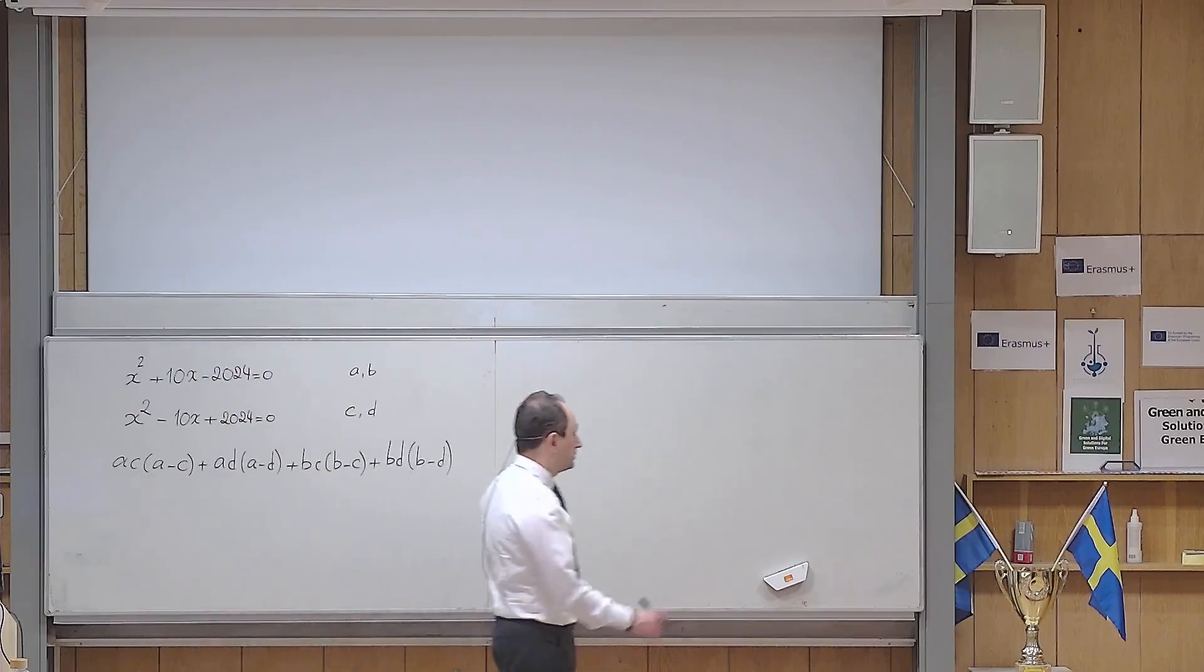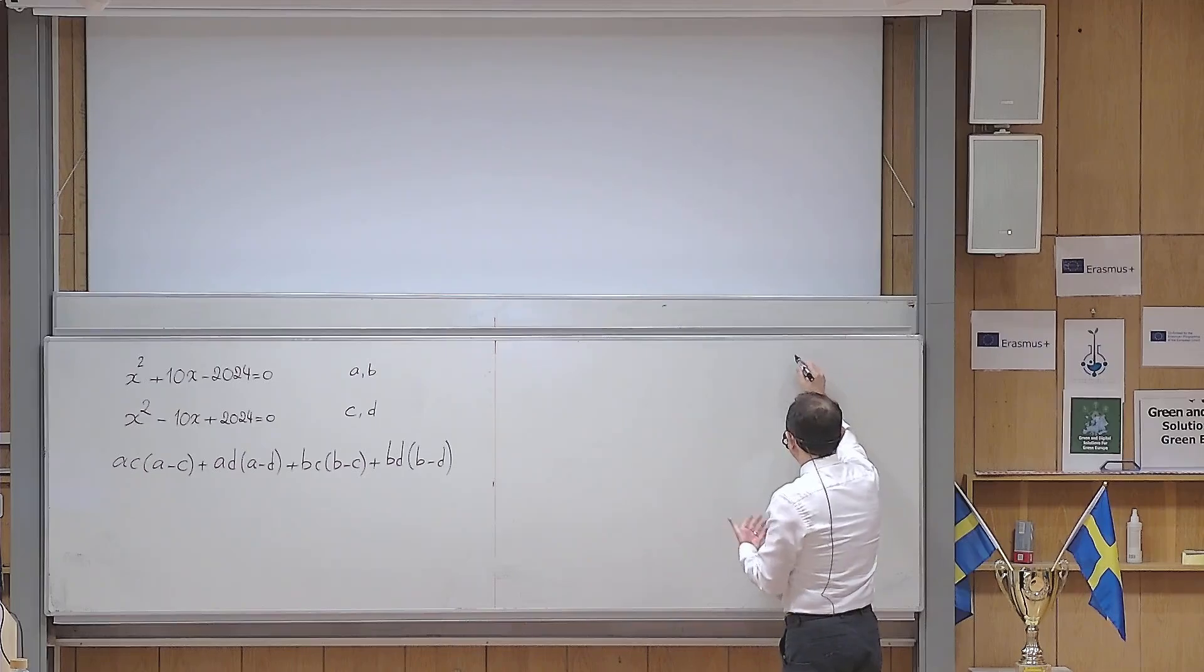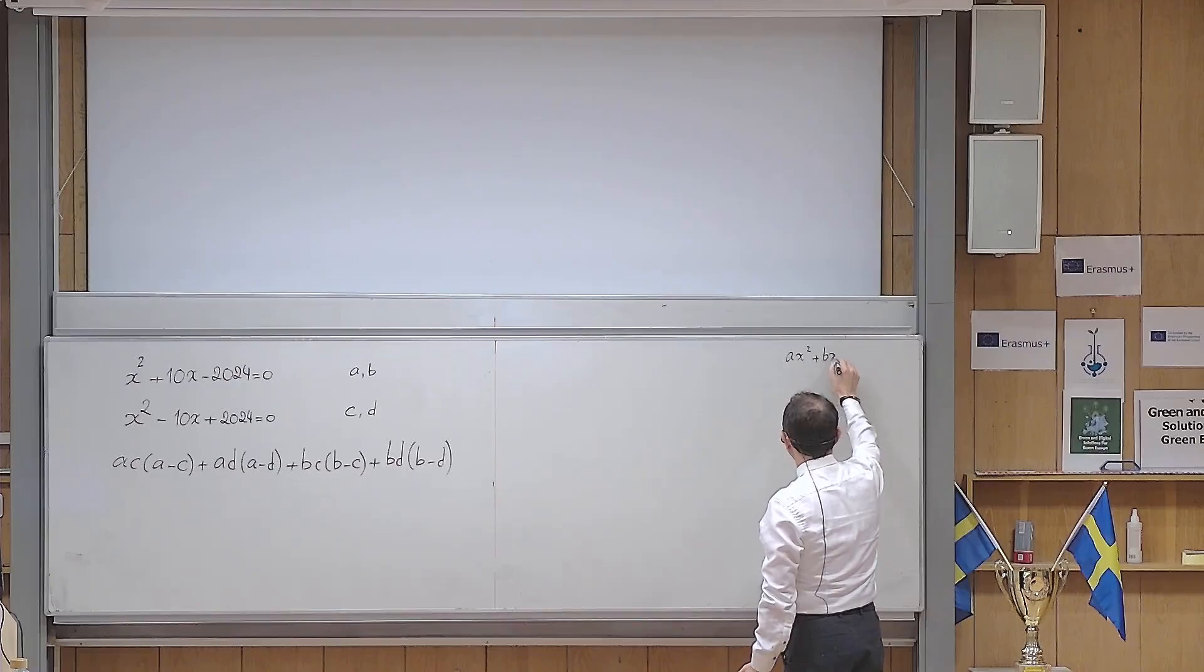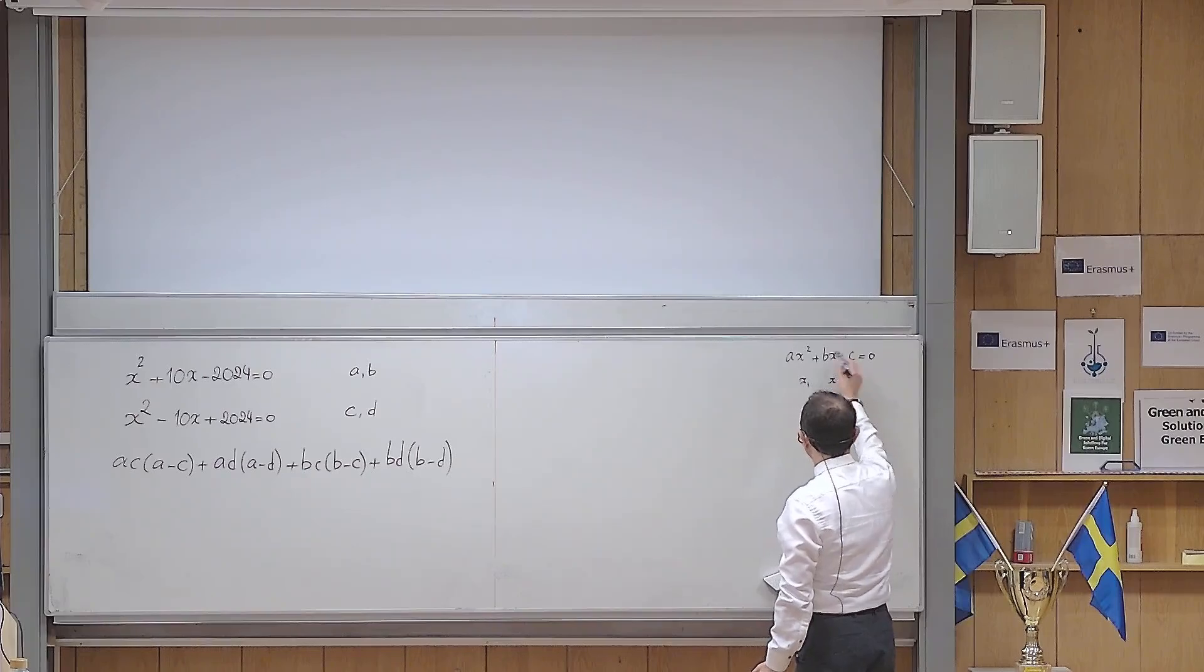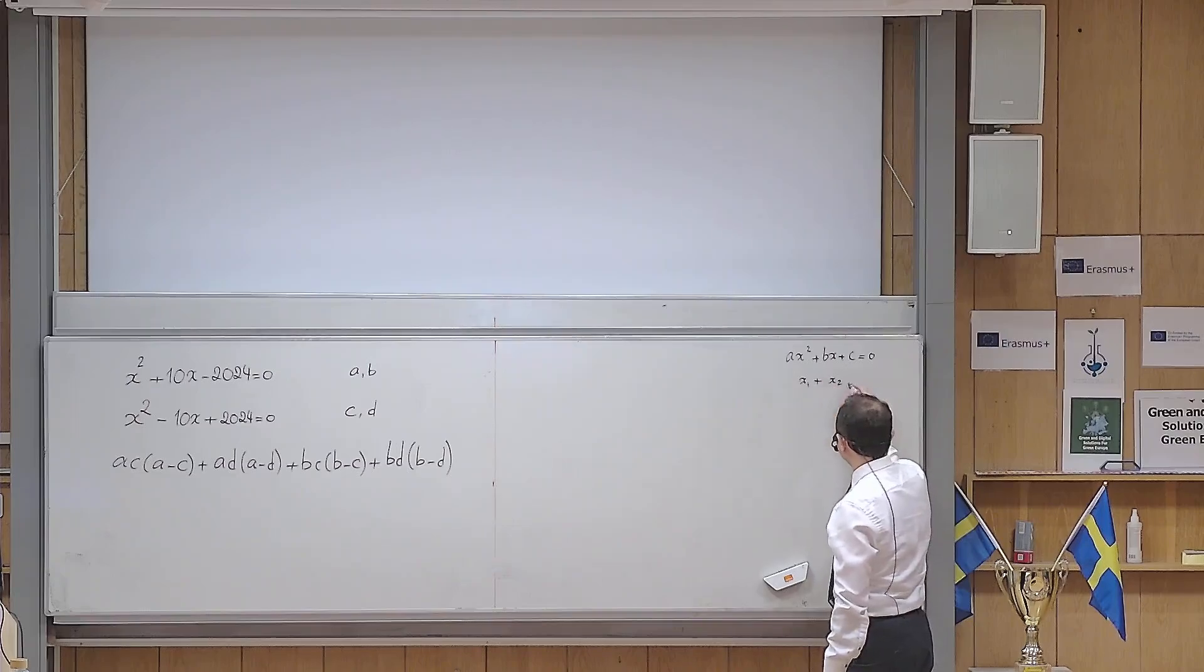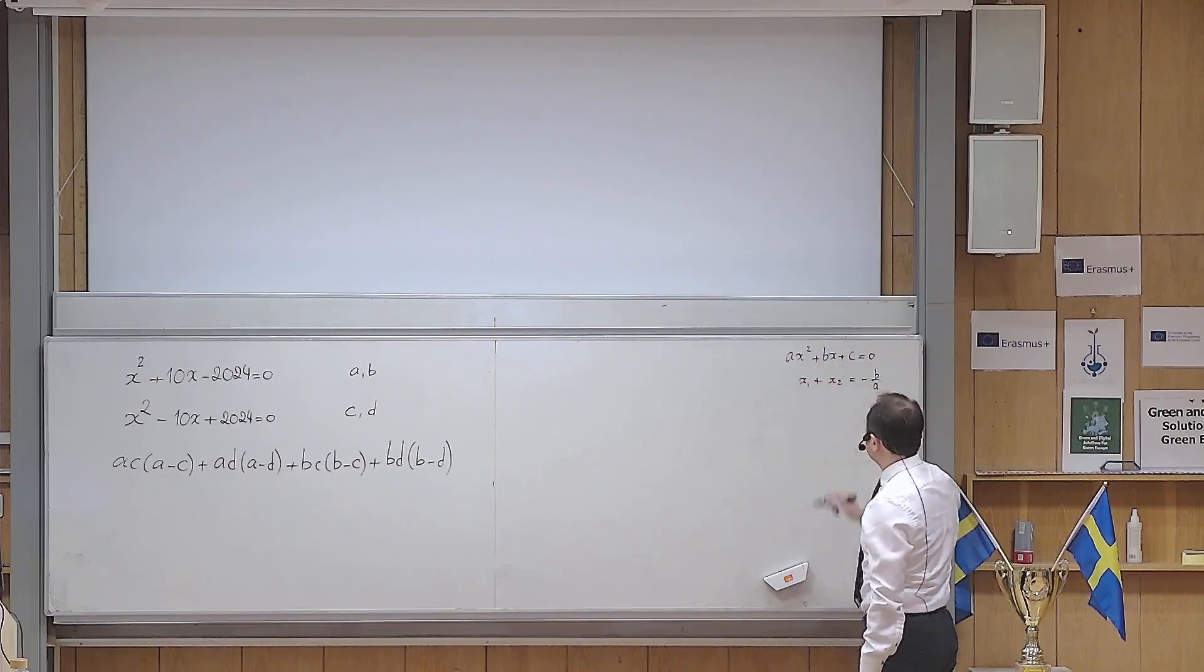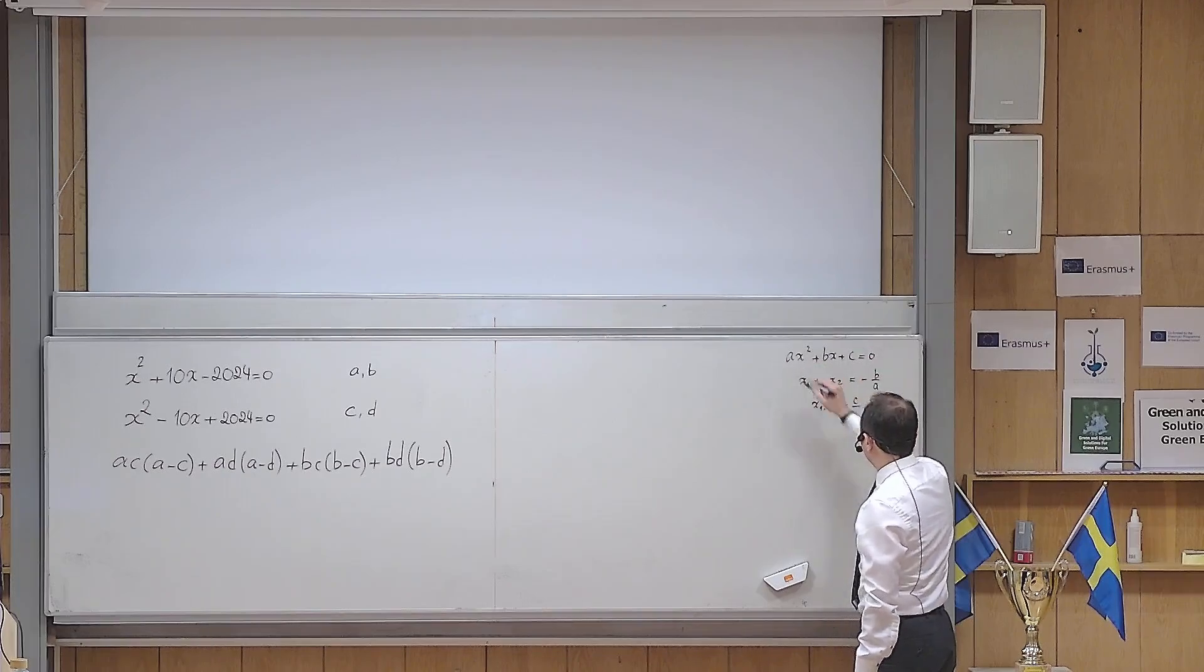We know that if I have a quadratic equation, and if x1 and x2 are the roots of that equation, either complex or real, the sum of these two is always equal to minus this coefficient of x divided by the coefficient of x squared, and the product is equal to the constant number divided by the coefficient of x squared.